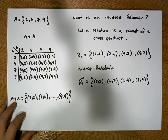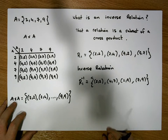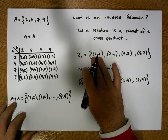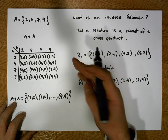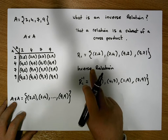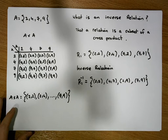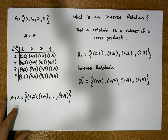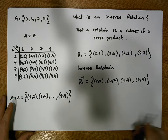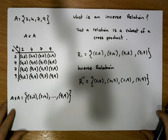And that's how easy it is to calculate the inverse of a relation. You simply take all the ordered pairs that are in the relation and you flip them, where the domain values become range values and the range values become domain values.